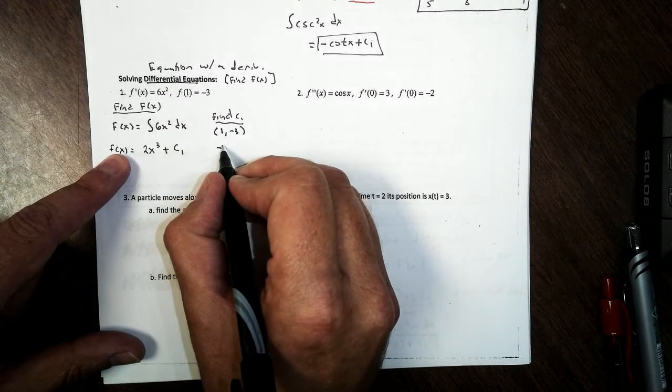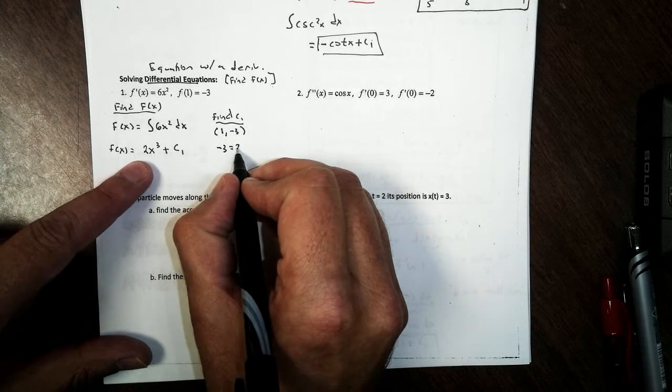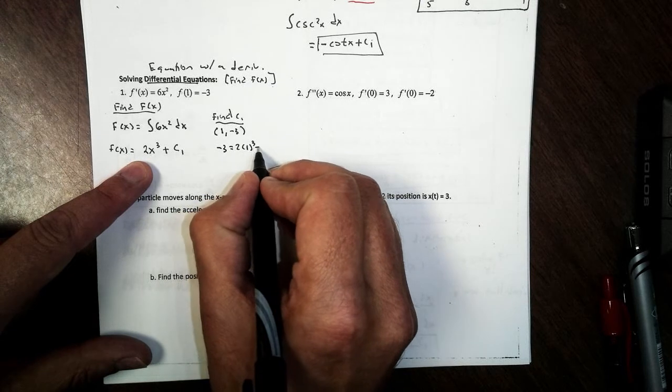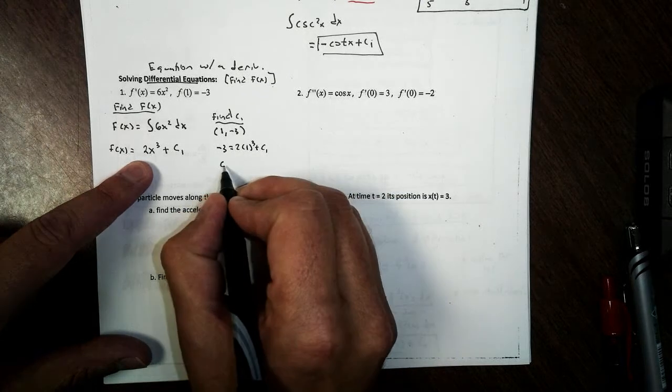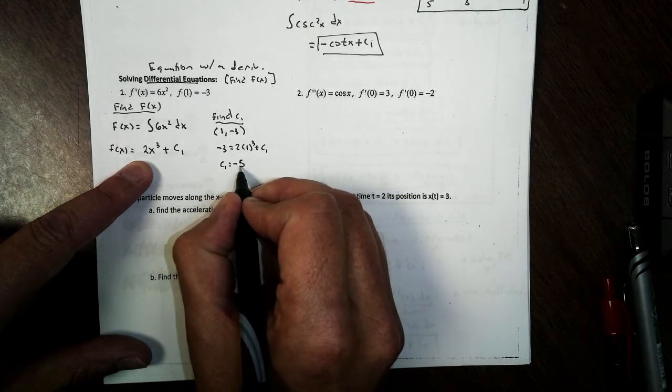My y value is negative 3 equals 2 times 1 cubed plus c1. So c1, if you solve it, would be negative 5.